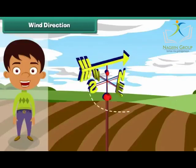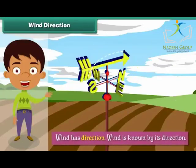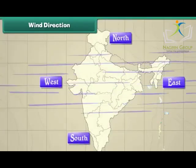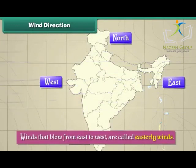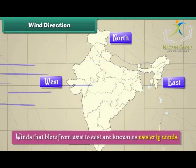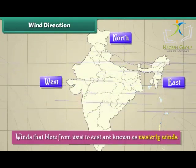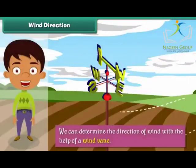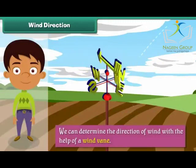Wind Direction. Wind has direction and is known by its direction. For example, winds which blow from east to west are called easterly winds. Similarly, winds that blow from west to east are known as westerly winds. We can determine the direction of wind with the help of a wind vane. The arm of the wind vane indicates the direction from which the wind is blowing.